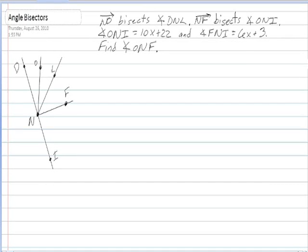What we have here is kind of a standard angle bisector problem. We're given that NO bisects angle DNL, and from our givens then we know that NO is bisecting DNL, so these two angles here will be congruent to each other.